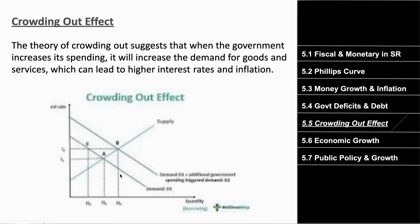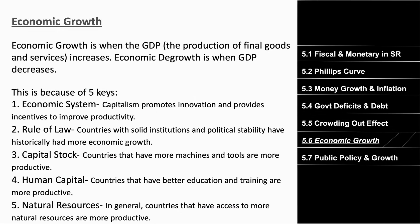Economic growth is when GDP increases — the amount of goods we can create in a year increases. Economic degrowth is when GDP decreases. There are five key things a country needs for economic growth. First, a decent economic system — AP Macro argues that capitalism promotes innovation and provides incentives to improve productivity. Second, the rule of law — countries with solid institutions and political stability historically have more economic growth.